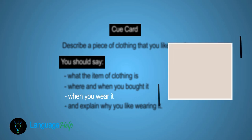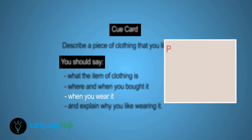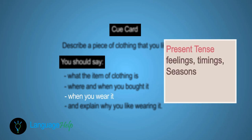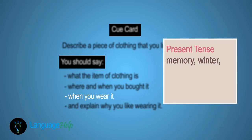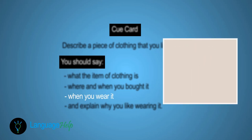The third cue asks us to talk about when we wear it. The tense of the cue is the simple present, which is exactly what we need to describe everyday activities like wearing a dress. We also need to think here of feelings, timings, and seasons. In our case it's a sweater, so think of winter. And in terms of feelings, think of memories.